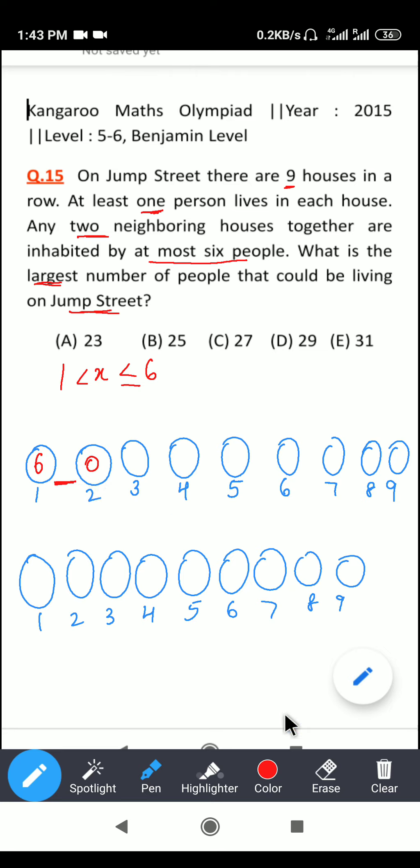So I cannot put here zero. So let's try some other combination. If I try here one and if I write here five, okay, in this case the conditions get met that one person is living in this house and there are five people living in this house. Together the total number of people is six.